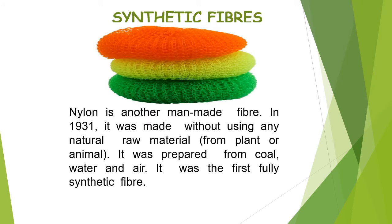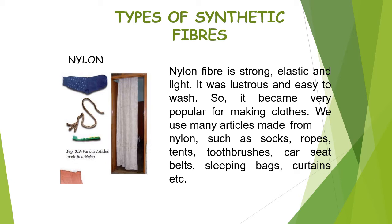The next fiber is nylon, which is actually the first fully synthetic fiber. In making nylon, no material from a natural source — neither from plants nor animals — is used. It is prepared using coal, water, and air. Various things made from nylon include socks, ropes, tents, toothbrushes, car seat belts, sleeping bags, and curtains.